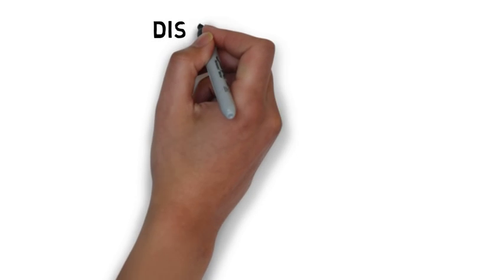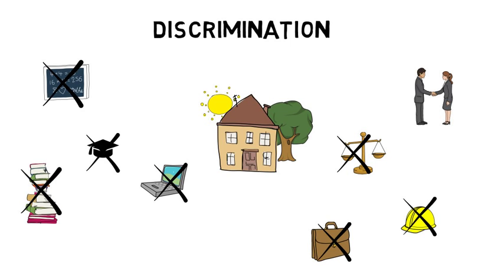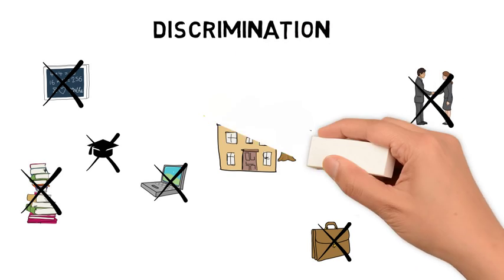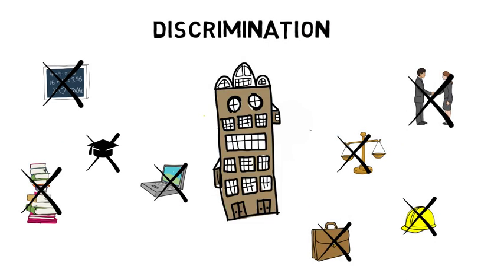People with autism face discrimination in all aspects of life. They are denied access to education, equal employment opportunities and the possibility of living in the community with everybody else. And sometimes, they are even locked up in institutions.